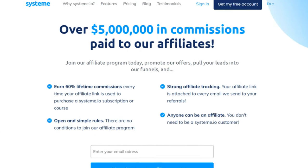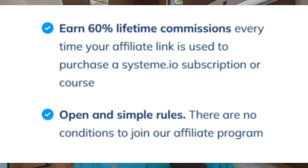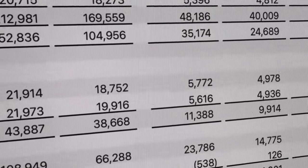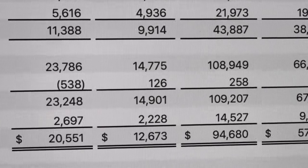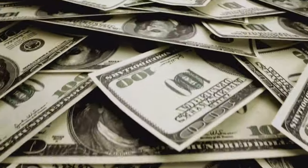Systeme.io also offers a lucrative affiliate program, which allows you to earn recurring commissions by promoting their platform. As an affiliate, you can earn up to 60% commission on every sale you generate. Every time someone signs up for a paid Systeme.io plan using your unique affiliate link, you're going to get paid. These commissions are recurring, meaning it's passive income you'll receive every single month for the lifetime of that customer. By becoming a Systeme.io affiliate, you can unlock a new stream of income alongside the digital products you're already selling.